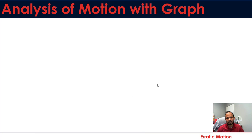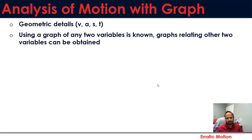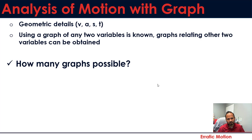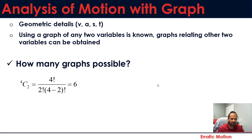How do we perform analysis of erratic motion using graphs? There are four geometric details: velocity, acceleration, position, and time. The concept behind using graph analysis is that if we have a graph of two variables — for example, v and t — we can generate graphs relating to the other two variables. Using simple math combinations, taking two out of four, you can have six graphs from those four geometric details.